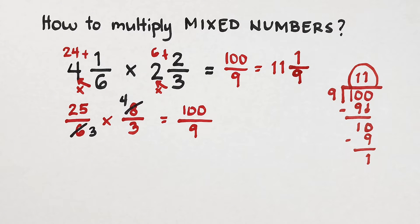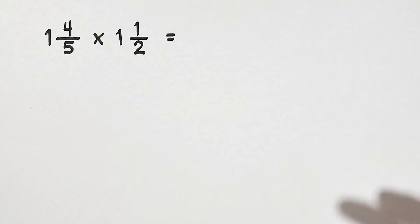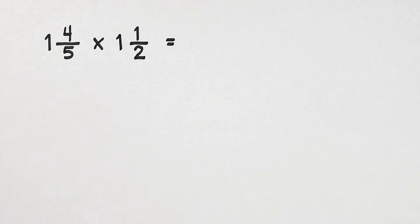So I hope guys, in the first example, nakuha nyo na agad yung process on how to multiply mixed numbers. So let's continue. Now for this example, you have 1 and 4 over 5 times 1 and 1 half. Now I will give you the time to solve this first before we dive in or before I discuss this example. By the way, you can pause the video for a while.